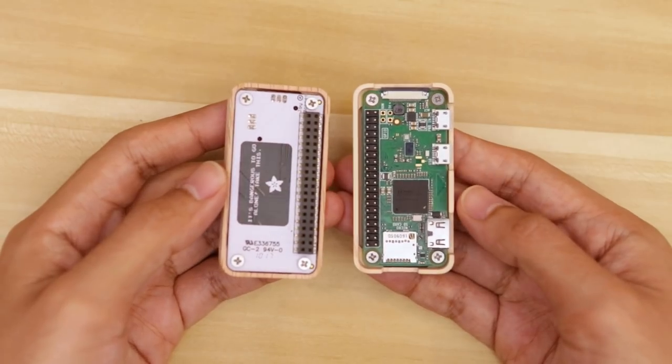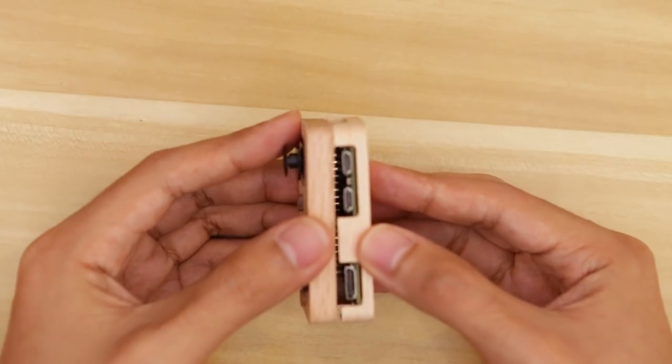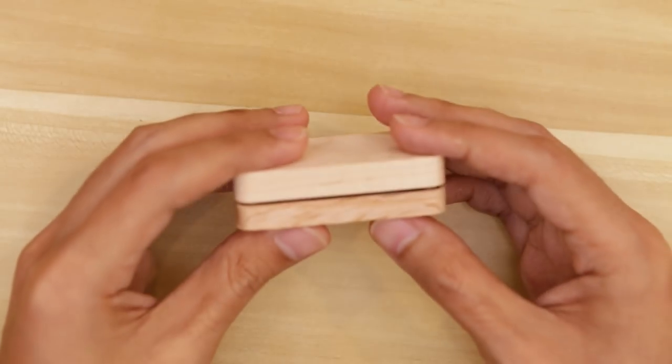And with our two halves now assembled, we can bring them together to finish this project. We just need to make sure that the pins are going into the female headers, then just firmly press them together.